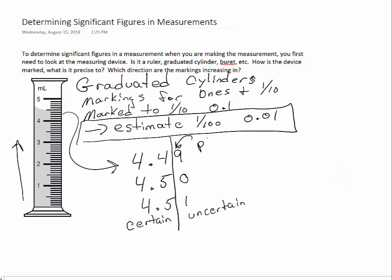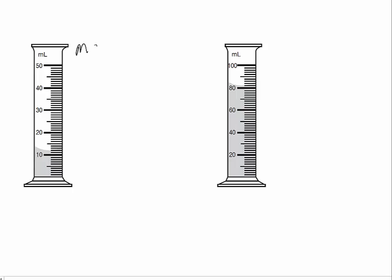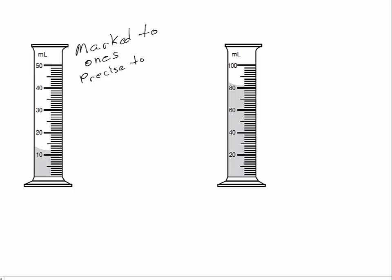We are precise to the hundredths place for this graduated cylinder. Looking at other graduated cylinders, we see they're marked in slightly different ways. The one on the left has nice big markings for tens of milliliters — ten, twenty, thirty, forty, fifty — with markings in between the tens that are marked to the ones. So we should be able to estimate one more place, meaning we should be precise to the tenths with this graduated cylinder on the left.